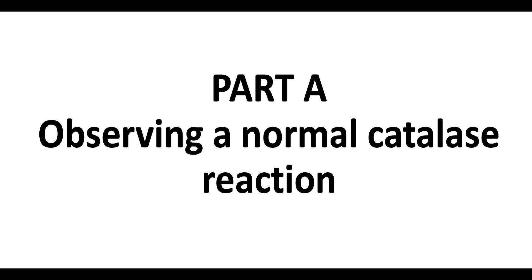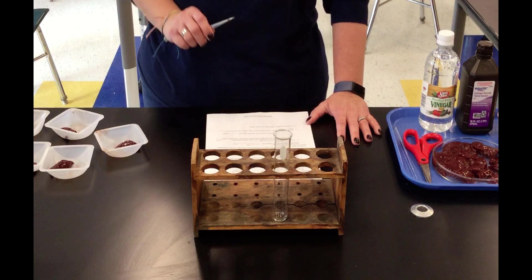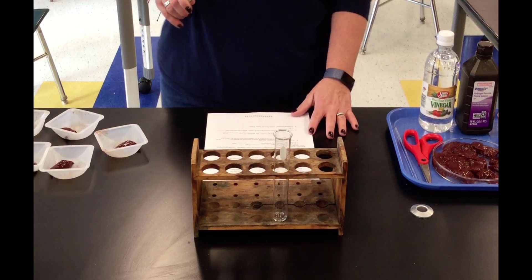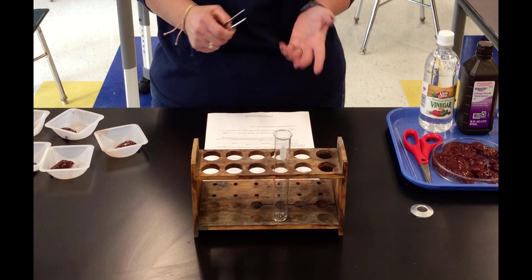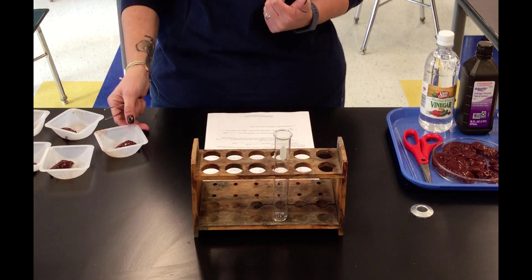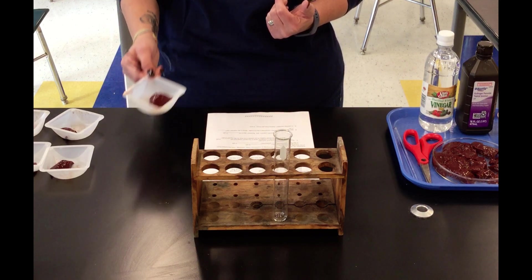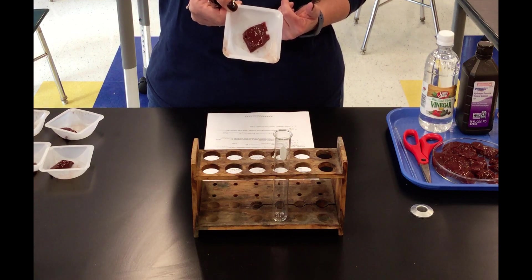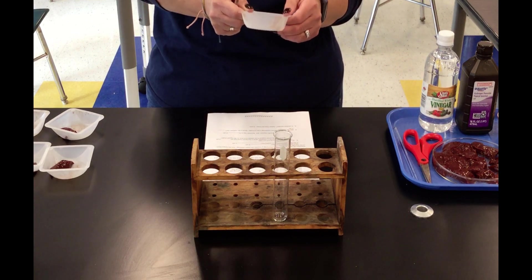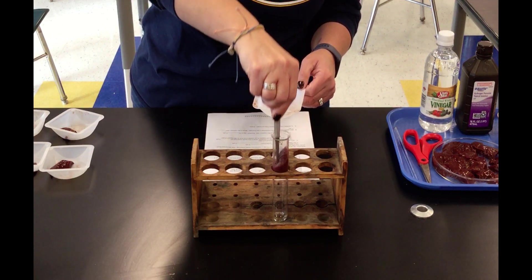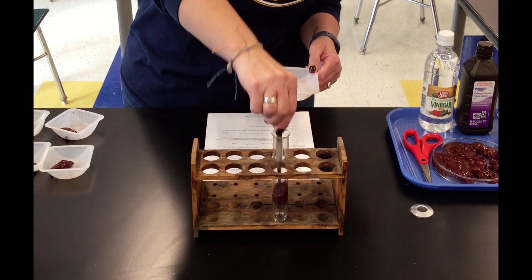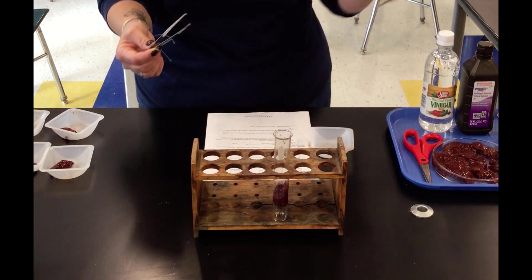The first part of the lab is Part A, where we will observe a normal catalase reaction. The first step of the procedure says to obtain a cut piece of liver and add it to the test tube. There's the liver — we're going to put it in the test tube and push it all the way down to the bottom using a stirring rod.